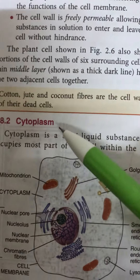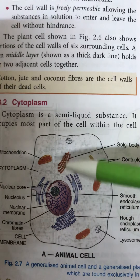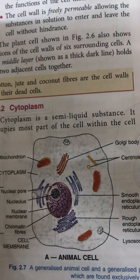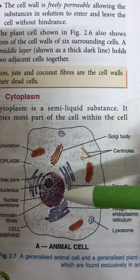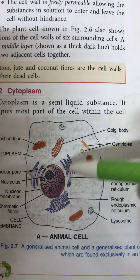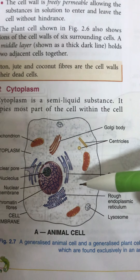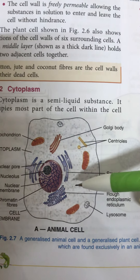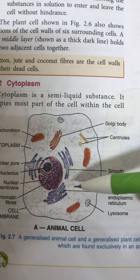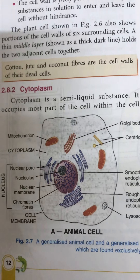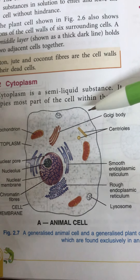Moving on to the cytoplasm. Cytoplasm is a jelly-like substance which fills the space between the nuclear membrane and the outer cell membrane. This space is filled with a jelly-like liquid called the cytoplasm. Inside this cytoplasm, all the tiny living parts are present, which are called the cell organelles. These organelles perform different functions, so whatever functions they perform come under the function of cytoplasm.